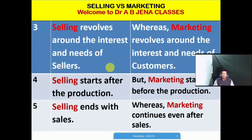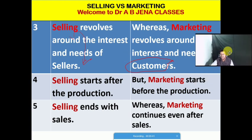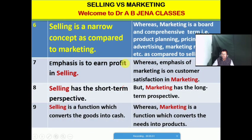The third basis of comparison is: selling revolves around the interest and needs of the seller. Selling depends upon the interest and needs of the sellers. Whereas marketing revolves around the interest and needs of the customers. As we know, in marketing, customer is the key. Whatever is done is for the greater interest of the customers — their needs, preferences, and wants — and these will be taken into consideration before producing any goods or services.